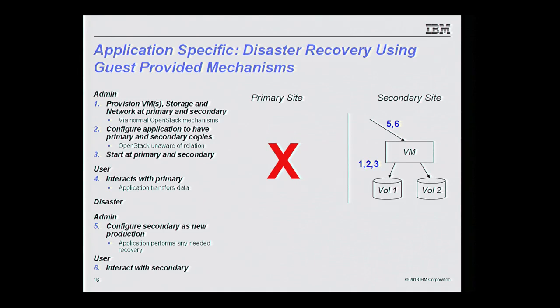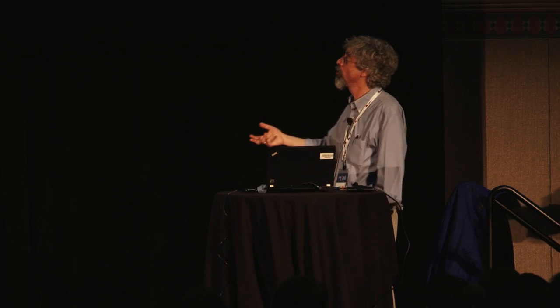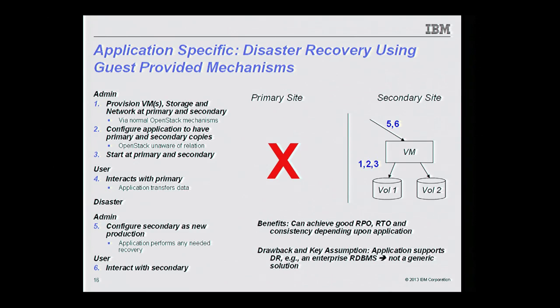When a disaster occurs, the admin — again without OpenStack involvement — configures the secondary as the new production workload, the application performs any additional cleanup needed, and users start interacting with the secondary. The benefits: application-based recovery can give good RPO, good RTO, and good consistency. The drawback is it depends entirely on the application — only certain applications like enterprise databases support application-level DR. It's not a generic solution and only works within the confines of that application, so you can't get cross-application consistency if your workload includes components that don't support it.